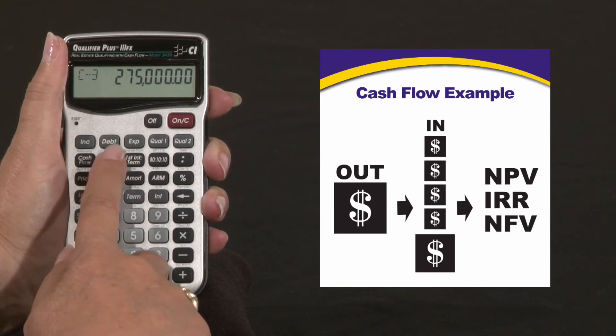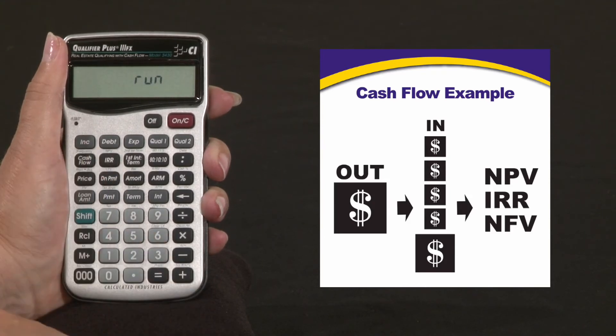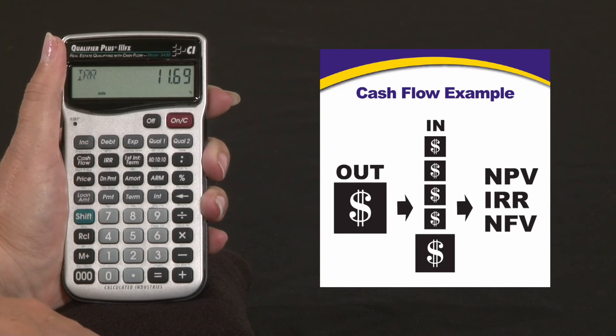Now to calculate the internal rate of return, we're just going to press the IRR key. It's going to take a few seconds to run. And instead of 10%, he's going to get 11.69% back on his money.